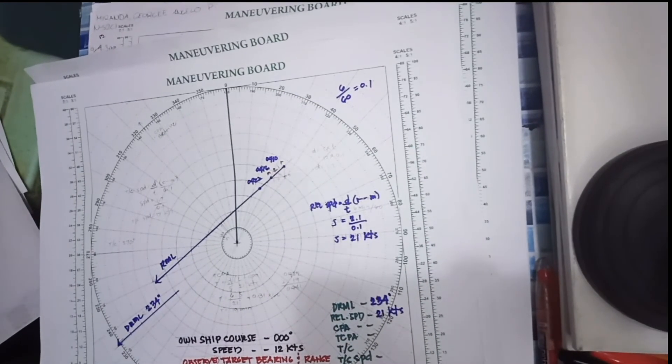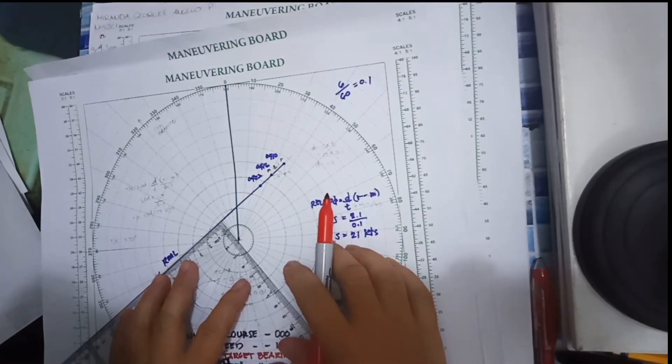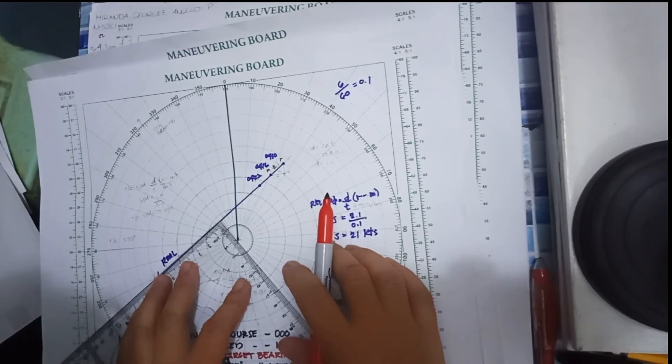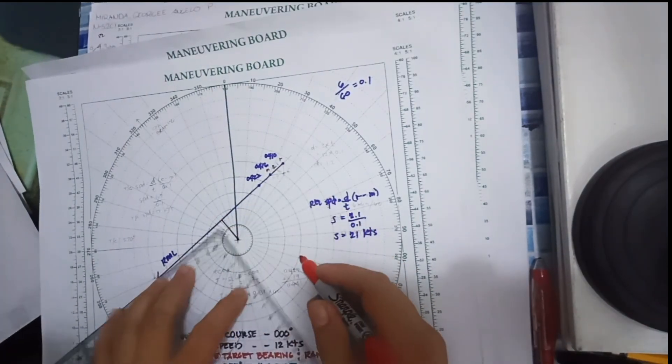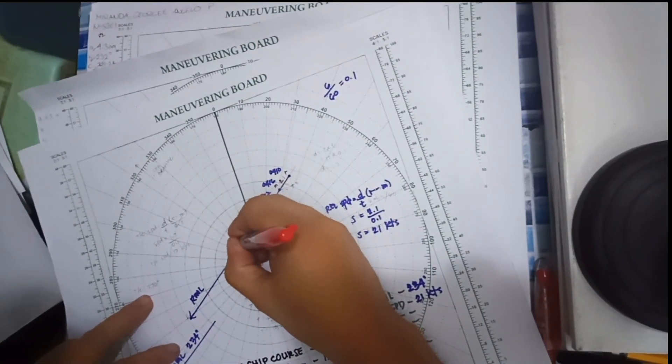Now we are going to get the CPA from the relative motion line, 90 degrees to the original position of your vessel. Then that will be your CPA.